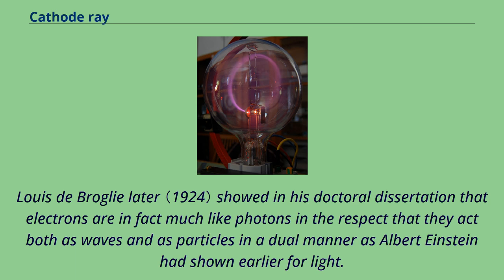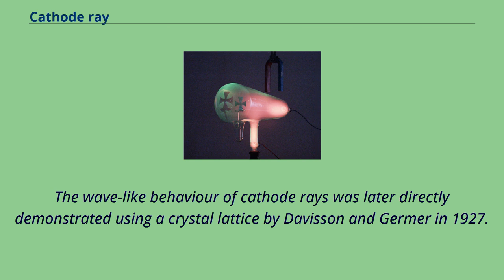Louis de Broglie later showed in his doctoral dissertation that electrons are in fact much like photons in the respect that they act both as waves and as particles in a dual manner as Albert Einstein had shown earlier for light. The wave-like behavior of cathode rays was later directly demonstrated using a crystal lattice by Davison and Germer in 1927.